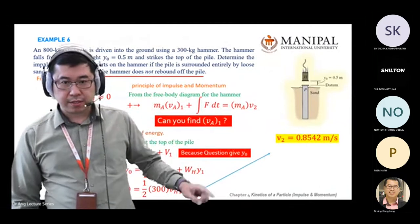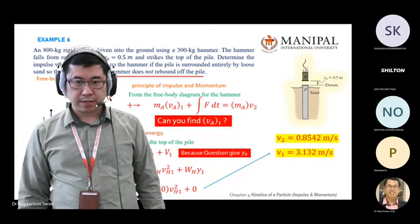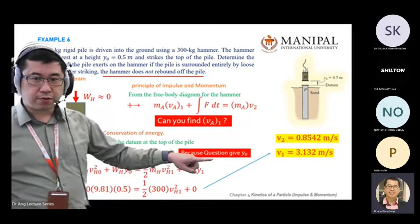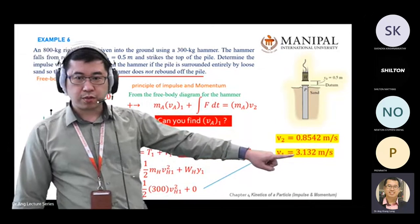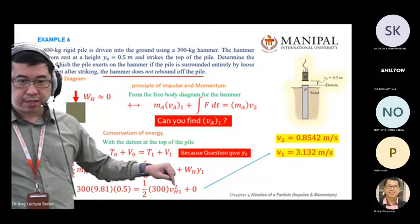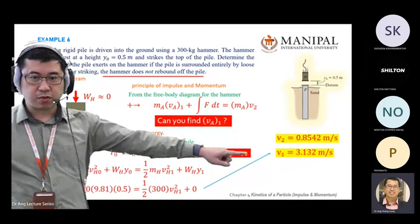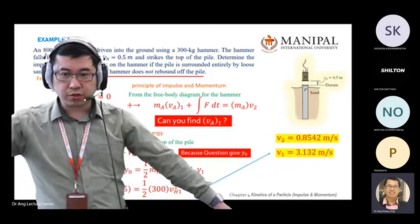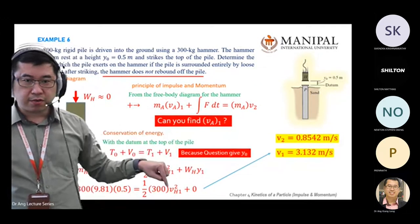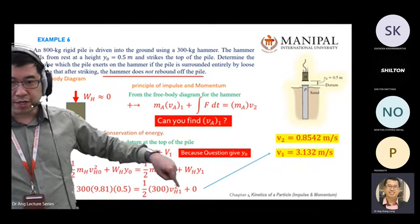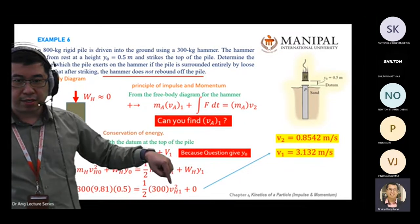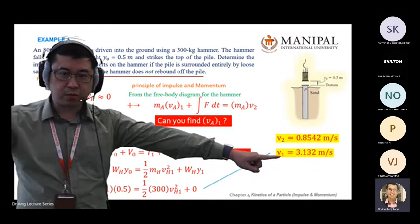Remember just now the velocity. So from here, you can find your v1 equal to 3.132. Your hammer velocity equals 3.132 meters per second. Just take note in your revision notes there. After you do the calculation for this one, you square root the answer and you'll get v1 equal to 3 point something.